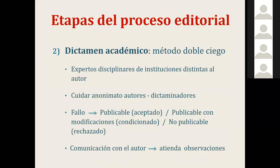La segunda etapa del proceso editorial es el dictamen académico, realizado con el método de doble ciego: ni el autor sabe quién lo evalúa, ni los evaluadores saben quiénes son los autores, garantizando así una evaluación neutral y profesional. Se buscan expertos disciplinares de instituciones distintas al autor, se cuida el anonimato de ambas partes, y una vez que se tienen los fallos existen tres opciones: publicable (aceptado), publicable con modificaciones (condicionado), o no publicable (rechazado).